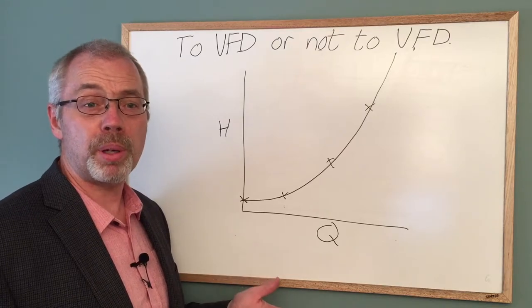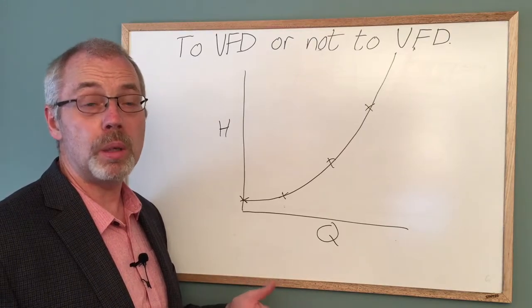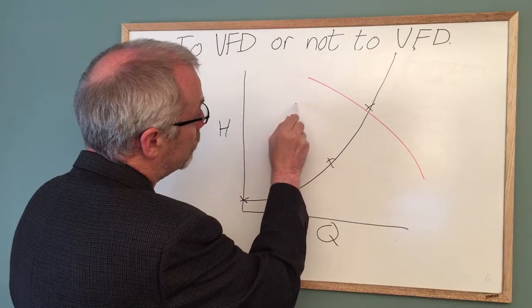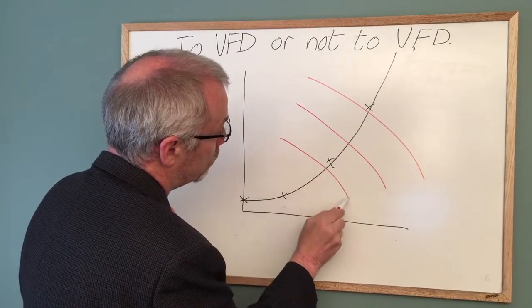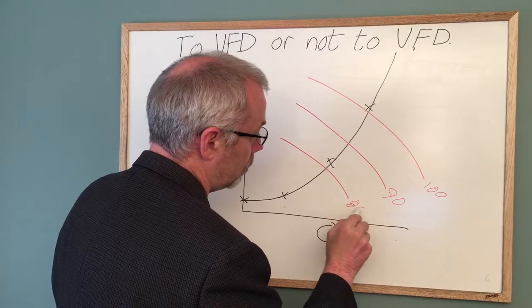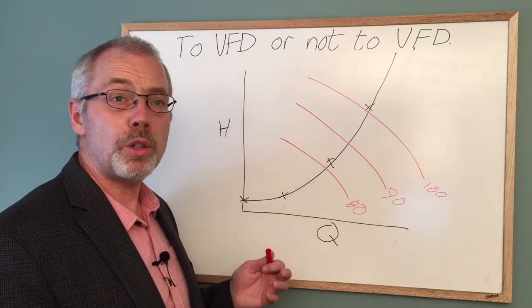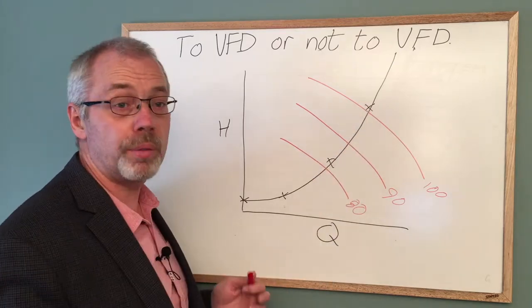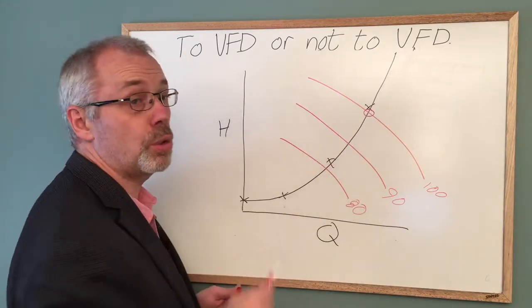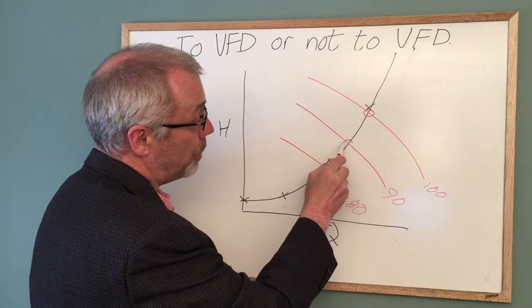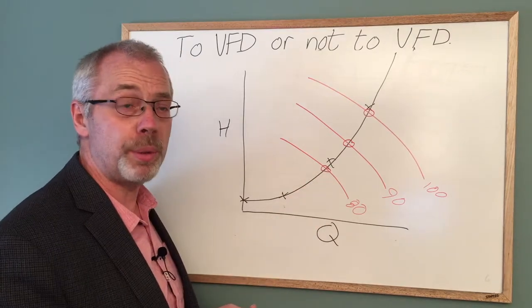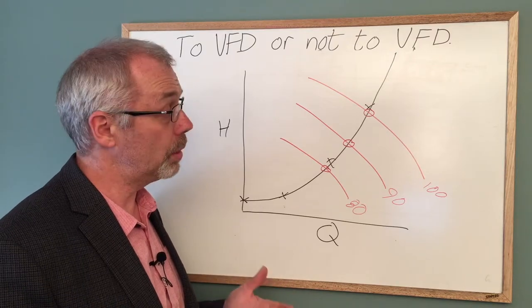Now let's draw the pump curves at 80, 90, and 100% speed over top of the system curve. The intersection between the pump curve and the system curve defines the flow rate. At 100%, the flow rate is right here with the associated discharge head, and as we reduce the pump speed to 90%, we reduce the flow rate, and we reduce the pump speed further to 80%, and we get a similar reduction in flow rate.